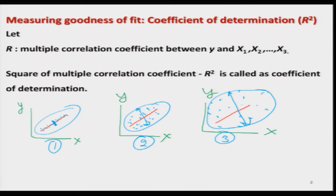Now the question is this: visually you can see, but once you are trying to use the multiple linear regression model, this type of scatter plot is difficult to obtain. Ultimately you need a value which can indicate whether the fitted model is like case 1, 2, or case 3. So we try to understand how to develop the goodness of fit.